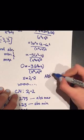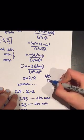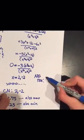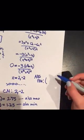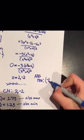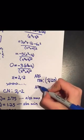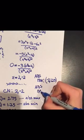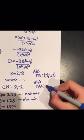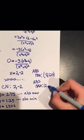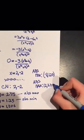So our answer: the absolute minimum is at (−2, 1.25) and the absolute maximum is at (2, 2.75).